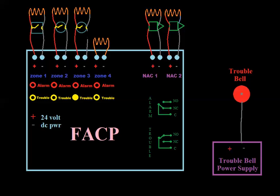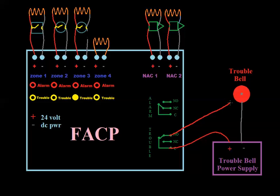We take our positive and go through the trouble relay. We would go to common and normally open — not normally closed — because we don't want this bell ringing all the time. We only want it to ring when the panel goes into trouble. So the circuit would usually not be complete, and then as soon as this trips, it would close.